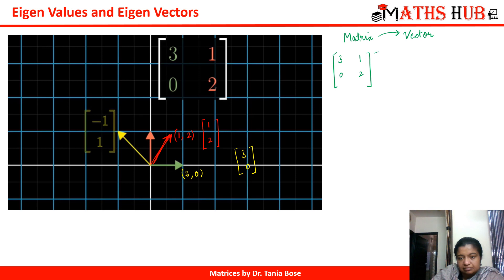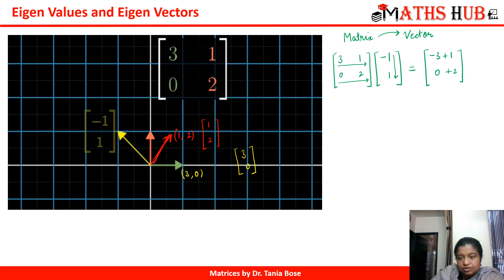Let us multiply the matrix with the vector [-1, 1]. The first row multiplied with the first column: 3 × (−1) = −3, and 1 × 1 = +1, giving −2. The second row with the first column: 0 × (−1) = 0, and 2 × 1 = 2, giving 2. So the result is the vector [−2, 2].